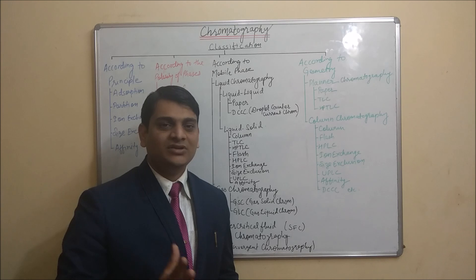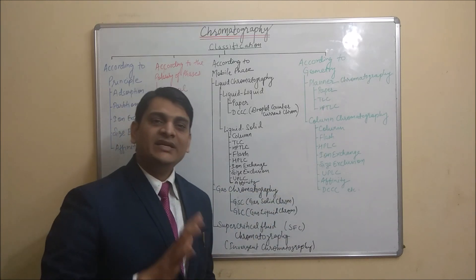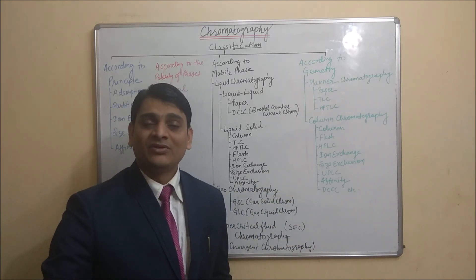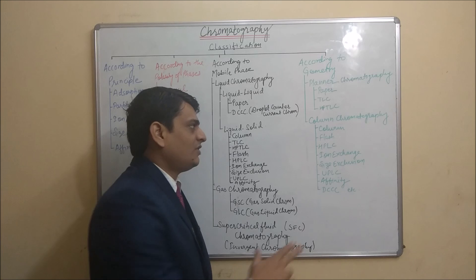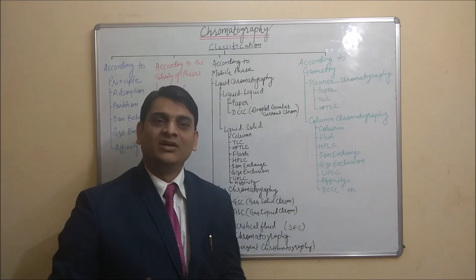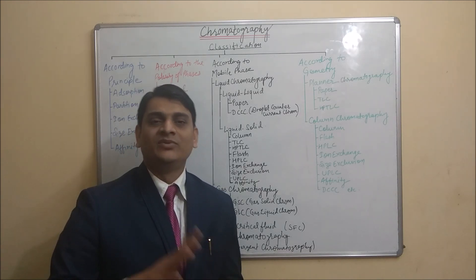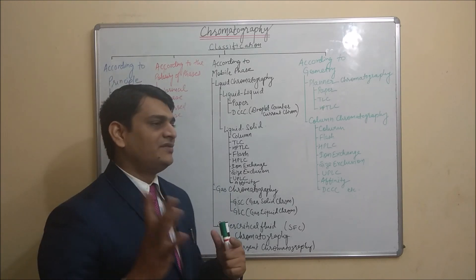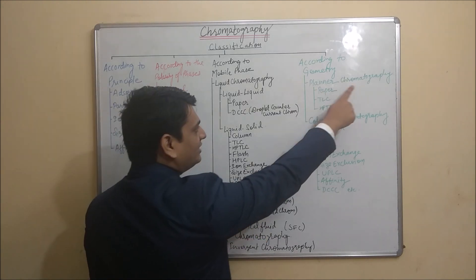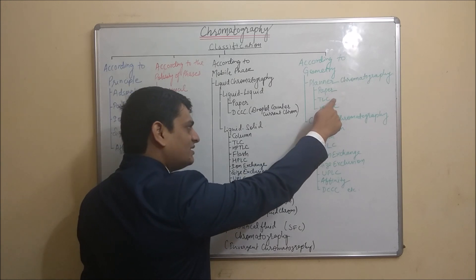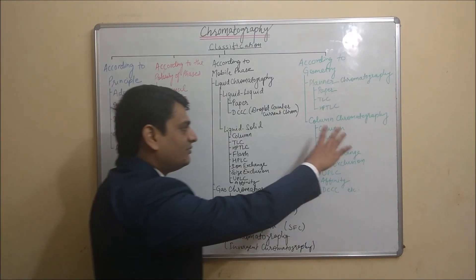According to geometry, chromatography is divided into two categories. First is planar chromatography, where separation runs on a plane — such as paper chromatography — or on a plate, such as TLC and HPTLC. Second is column chromatography, where a hollow tube contains the stationary phase; the stationary phase is static while the mobile phase is dynamic and runs through it.